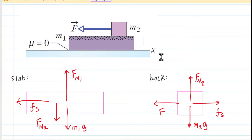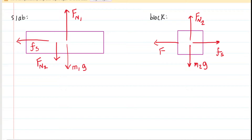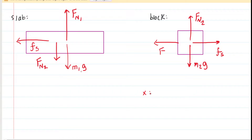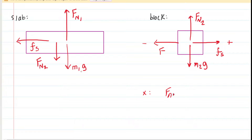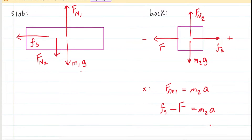So these are the free body diagrams illustrating the forces acting on these two bodies. Now, after drawing a free body diagram, we pivot to applying Newton's second law. Let's return to the block and look at the X direction. We assign positive to the right and negative to the left. The net force in the X direction equals the mass of block two times its acceleration: the positive static frictional force plus the negative applied force F equals M2 times A.